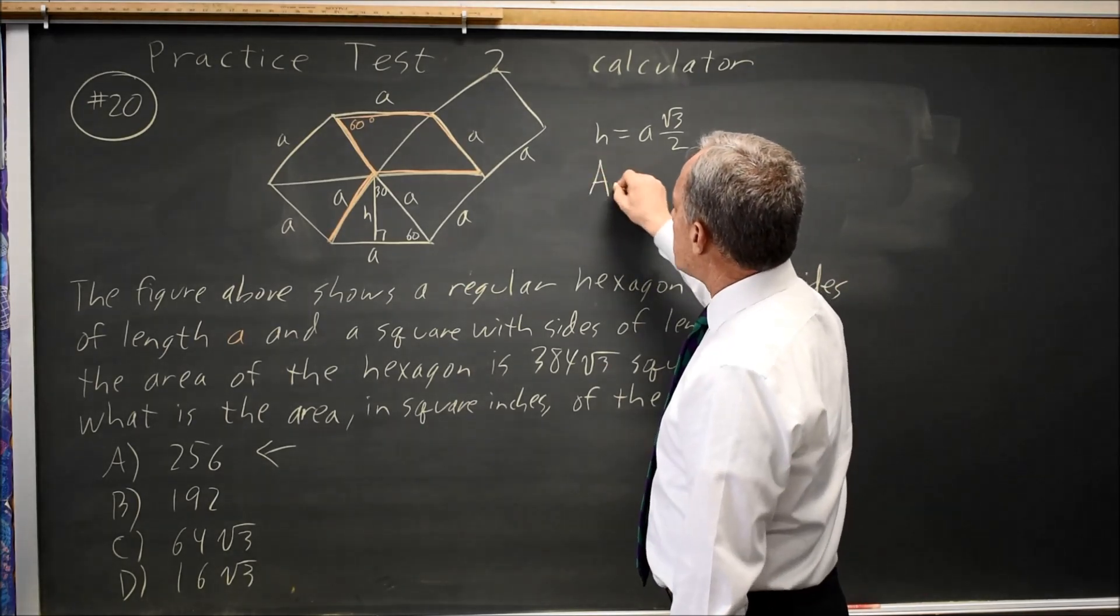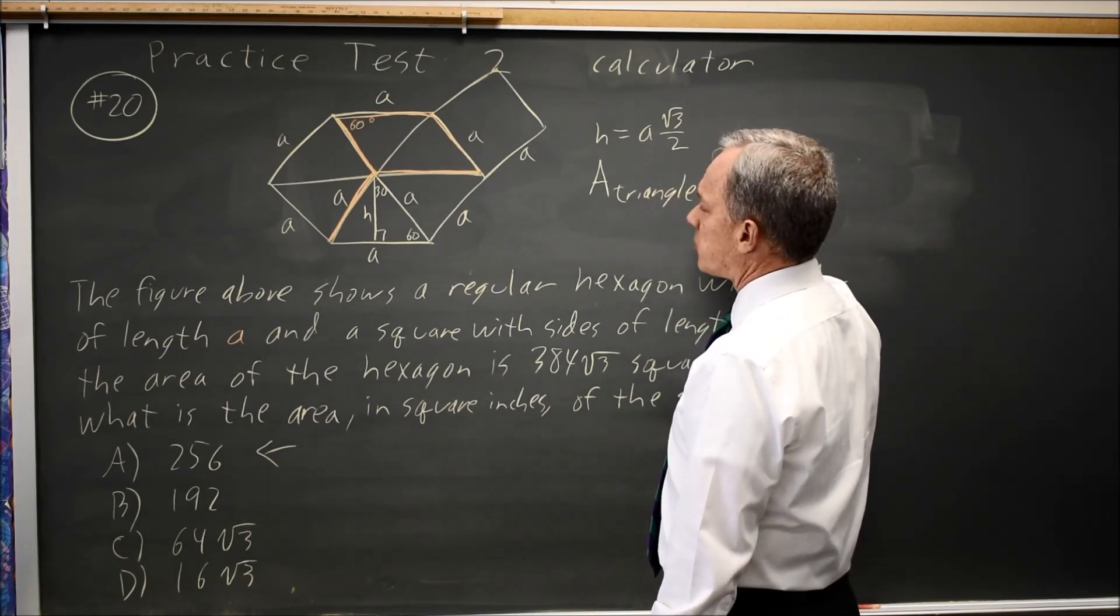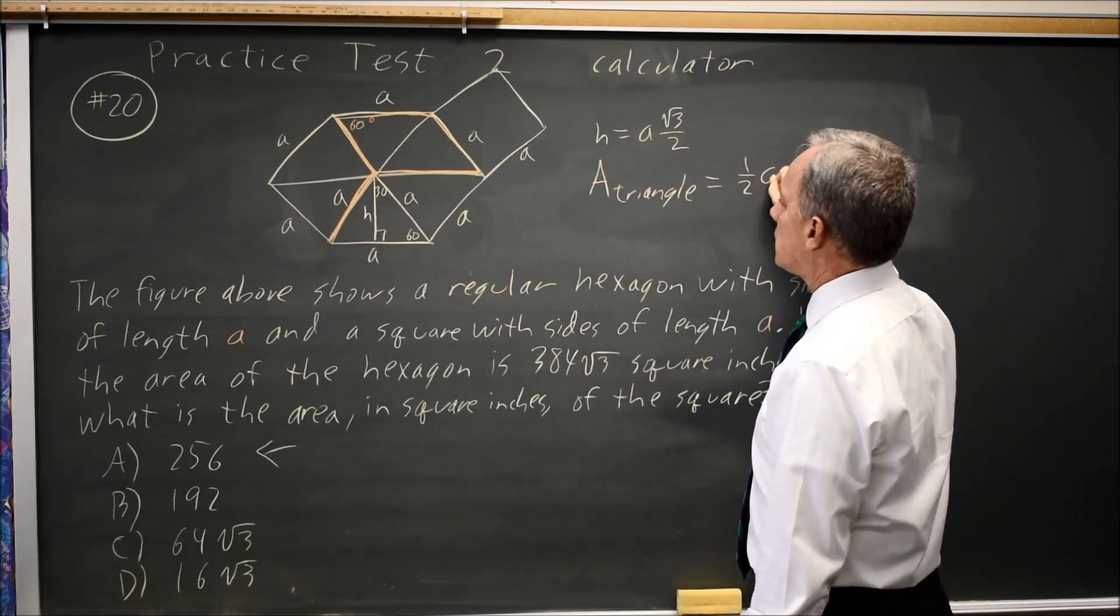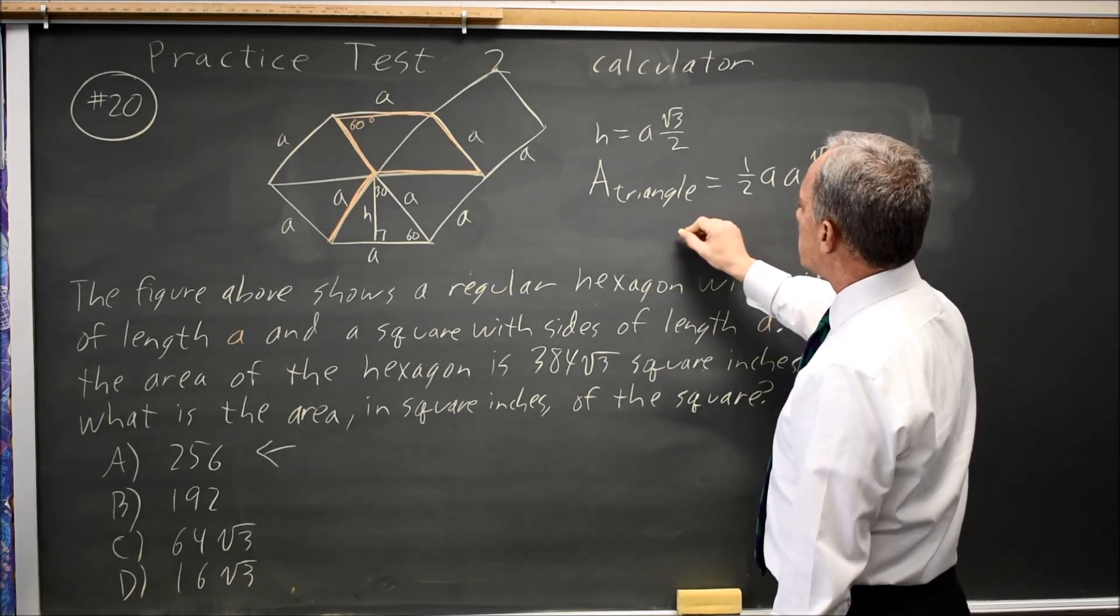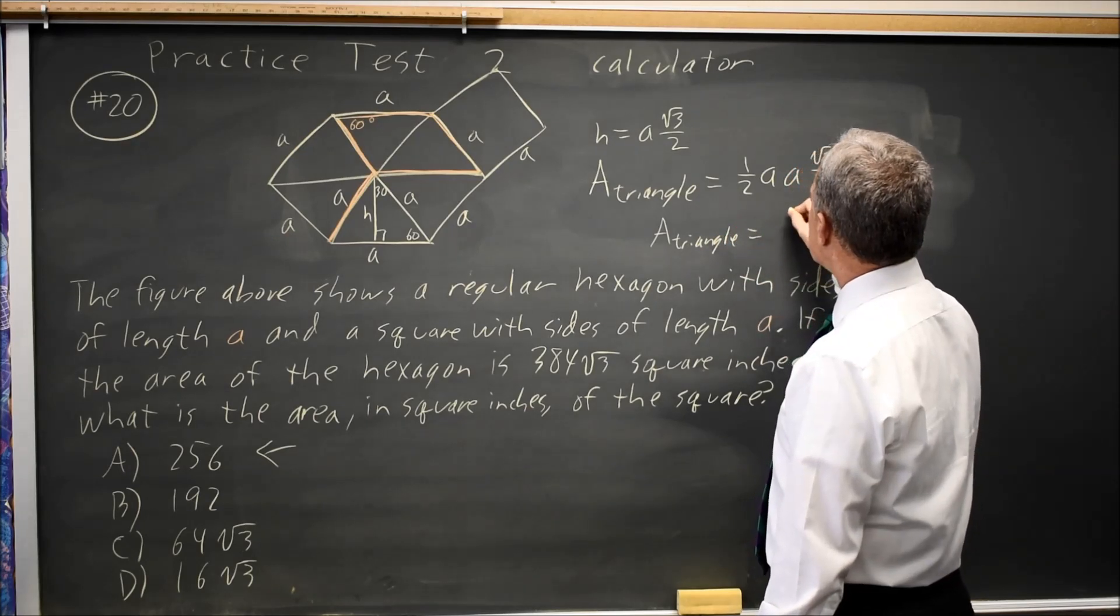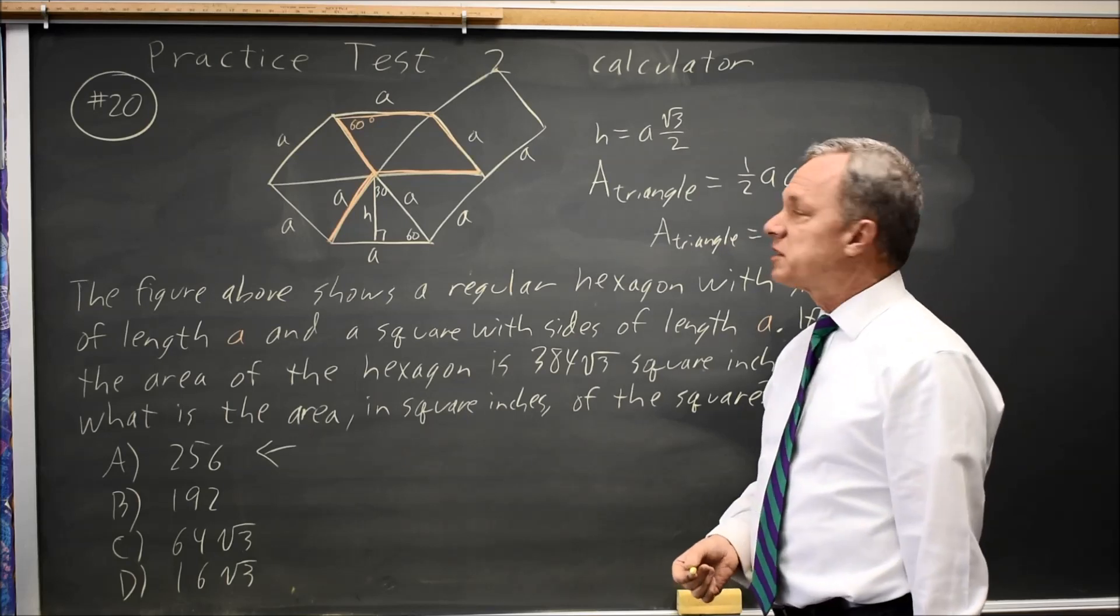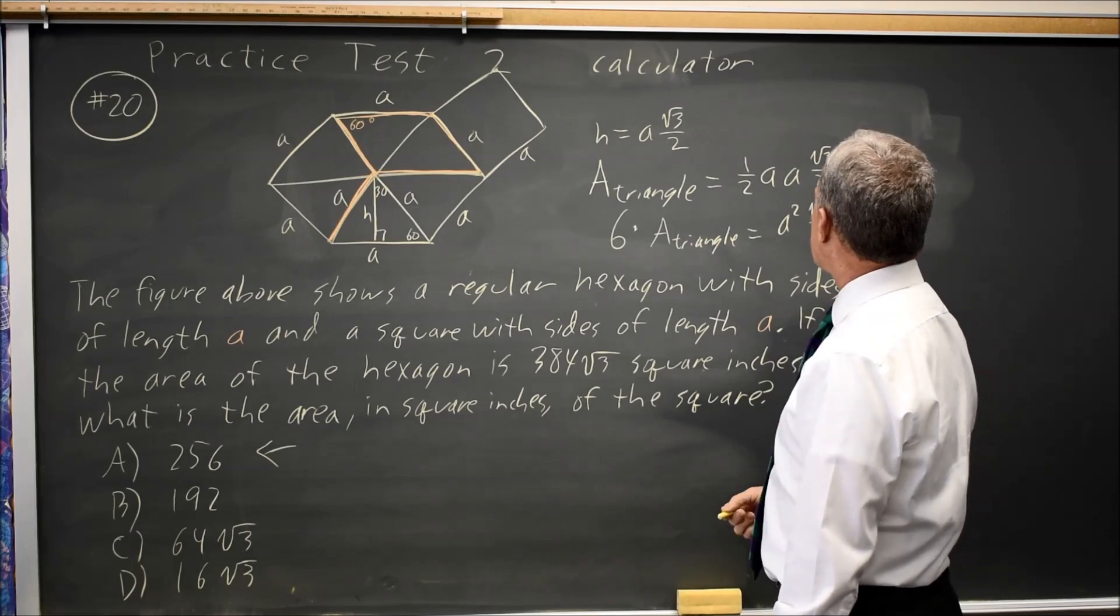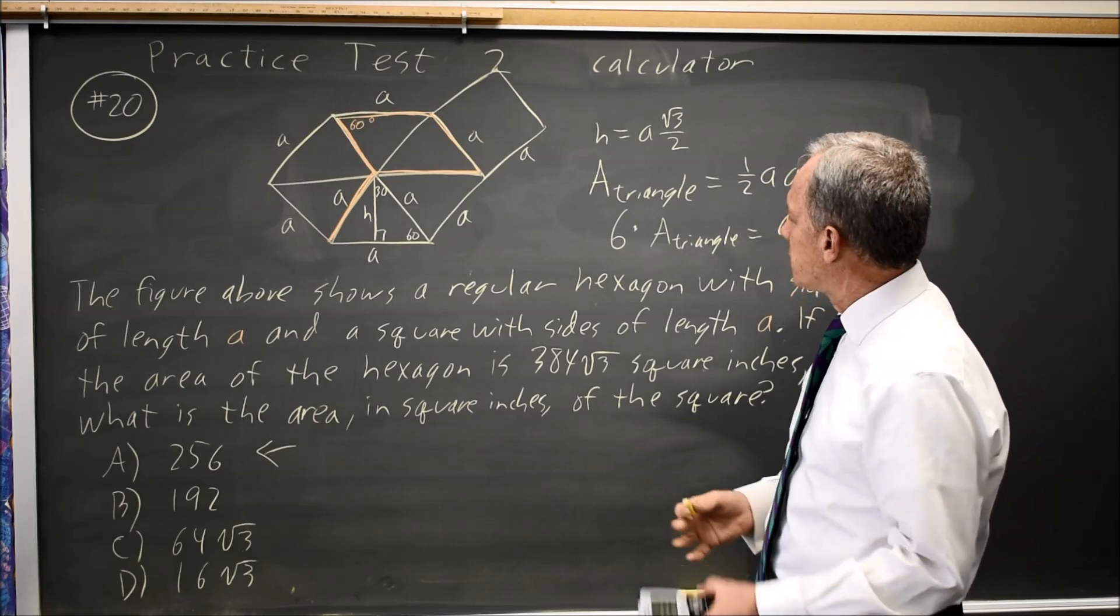The triangle area is one-half the base times the height. The base is A, the height is A√3/2. So each triangle's area is A²√3/4. We have six of them, so all six triangles is 6A²√3/4, which is also the hexagon area.